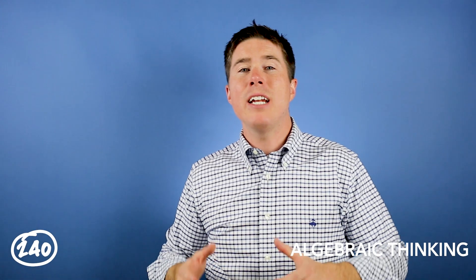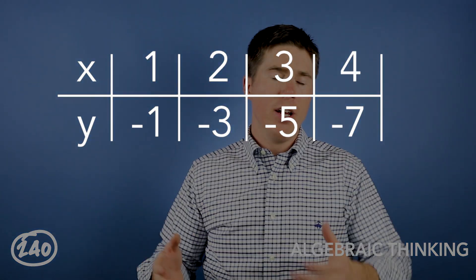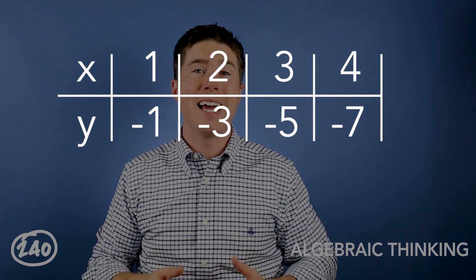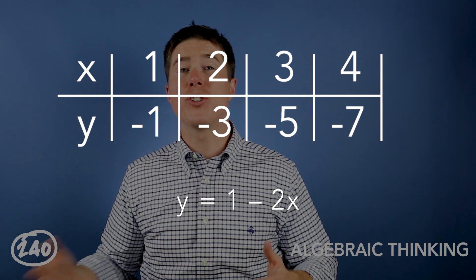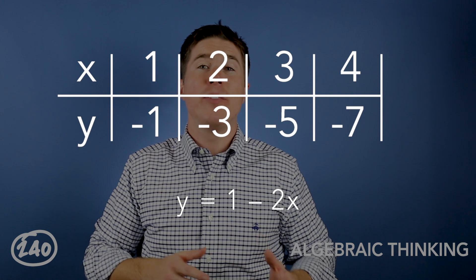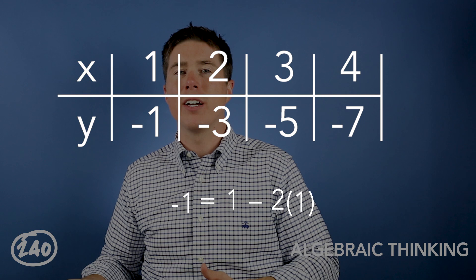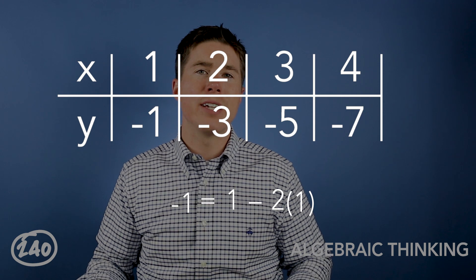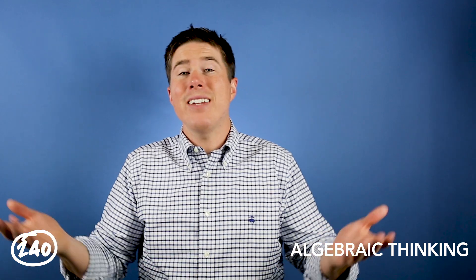The next concept is creating an equation from a data set. The test will give you a data set and you're required to create a corresponding equation that matches it. For the given data set, the corresponding equation is y = 1 − 2x. Any time you plug in the x value, you get the corresponding y value. While this kind of question can seem difficult, it's one of the easier questions to answer if you just work backwards — look at the answer options, plug in the data set values to each equation, and see if they match.